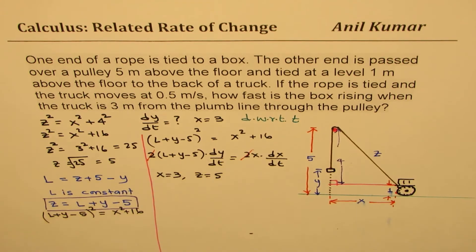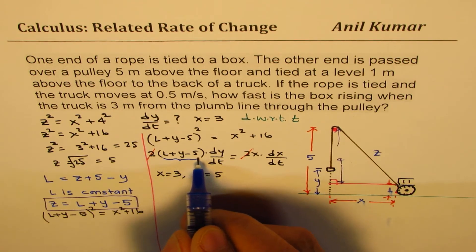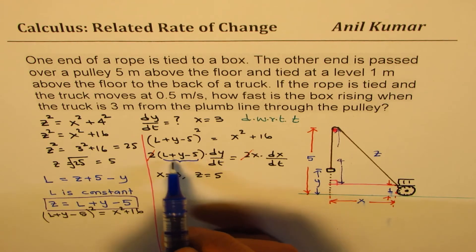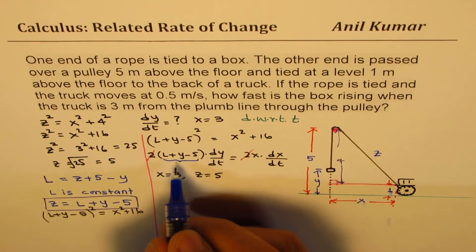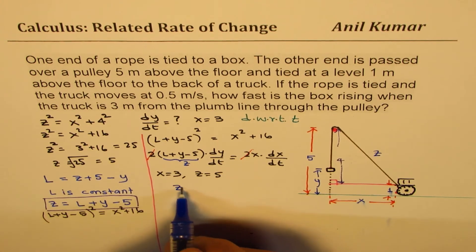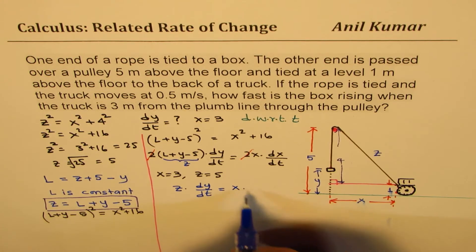But what is L? We don't know. But anyway, what you really know is this term. L plus 5 minus, L plus Y minus 5 is Z. So this term is Z.